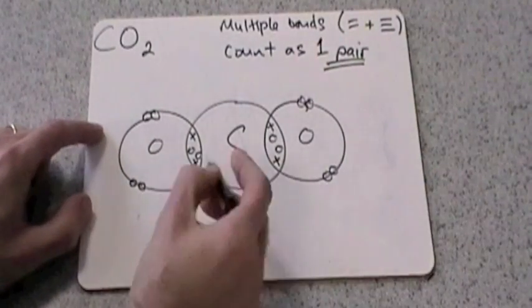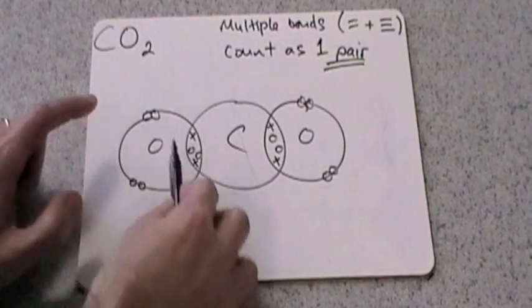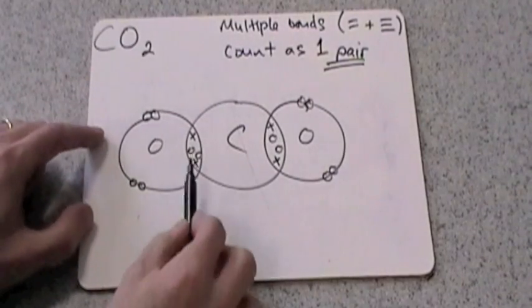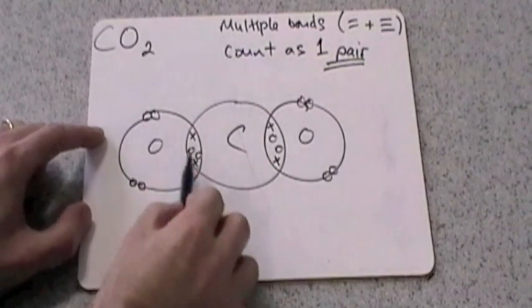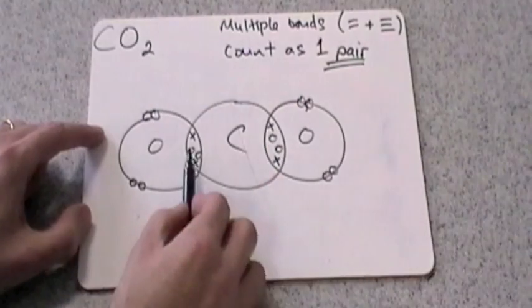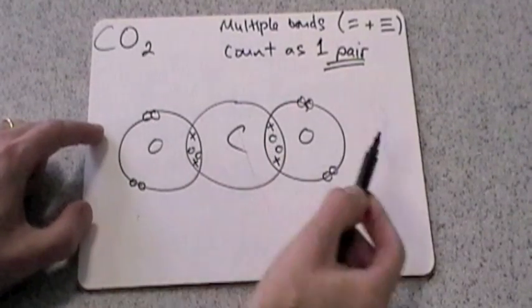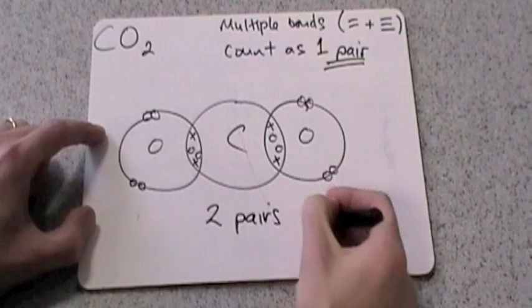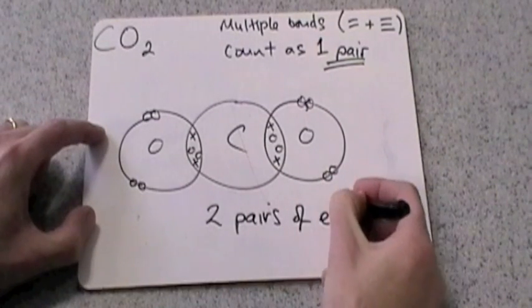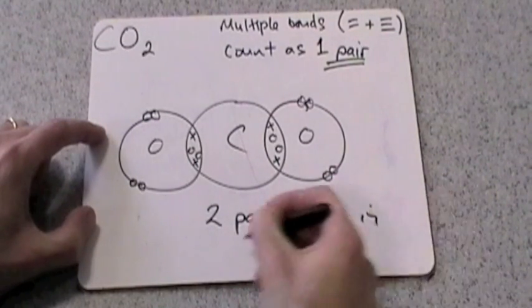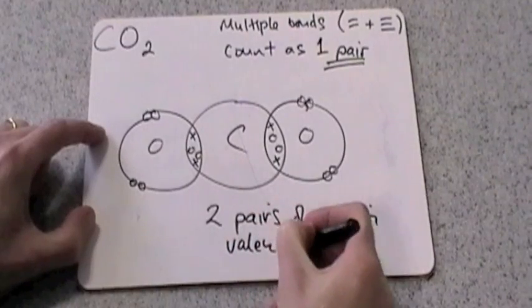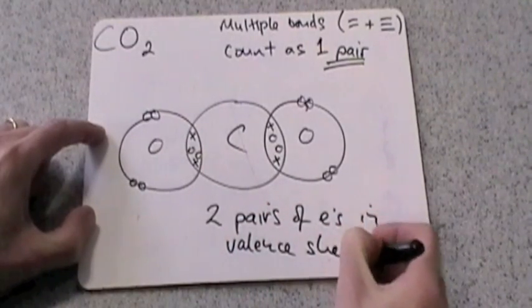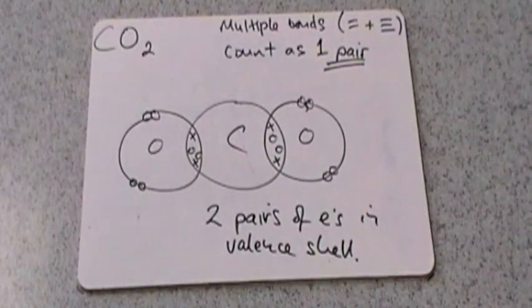So carbon dioxide in VSEPR terms has only got two pairs of electrons. One pair there because that's a double bond which counts as one pair, one pair there. One pair there, one pair there. So that's two pairs of electrons in the valence shell. Two pairs of electrons in the valence shell.